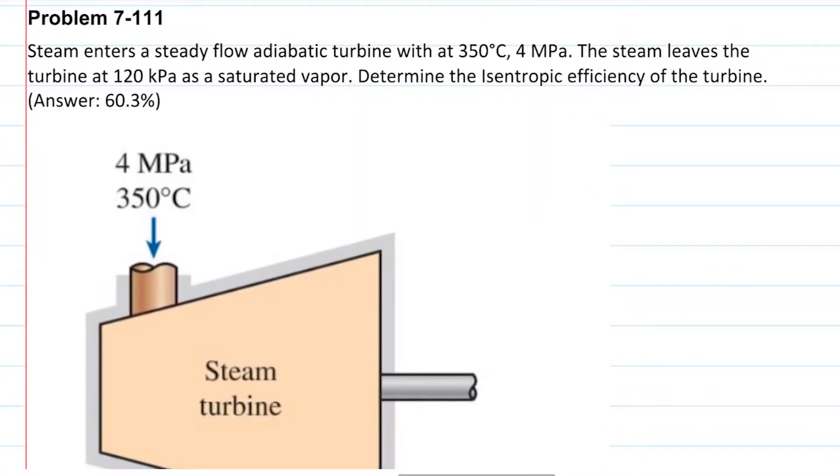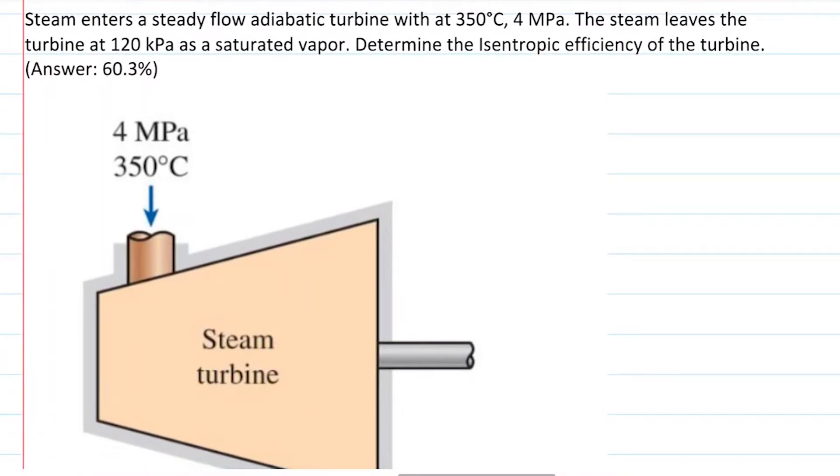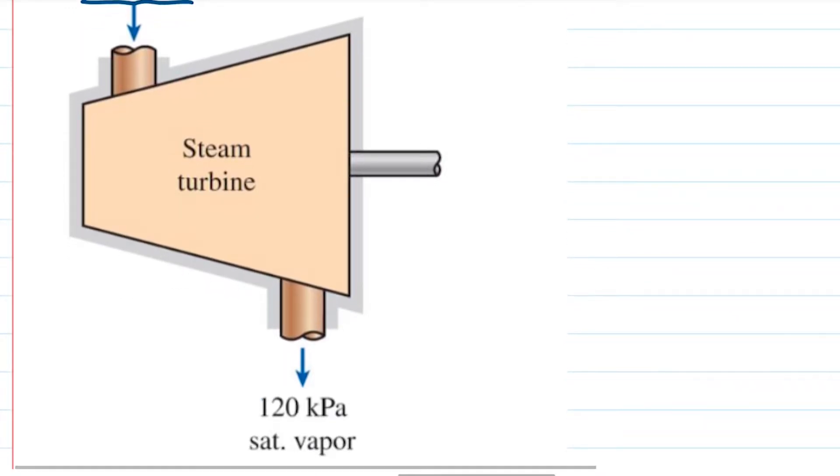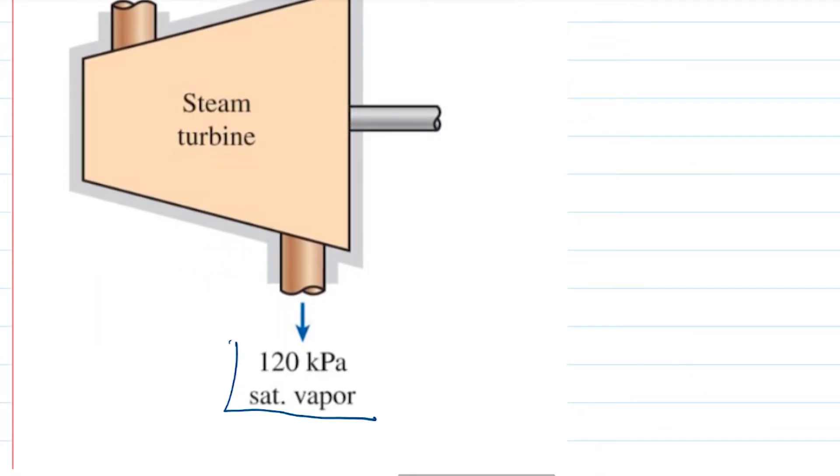Problem 7-111. Steam enters a steady flow adiabatic turbine at 350 degrees Celsius and 4 megapascals. The steam leaves the turbine at 120 kilopascals as a saturated vapor. Determine the isentropic efficiency of the turbine.